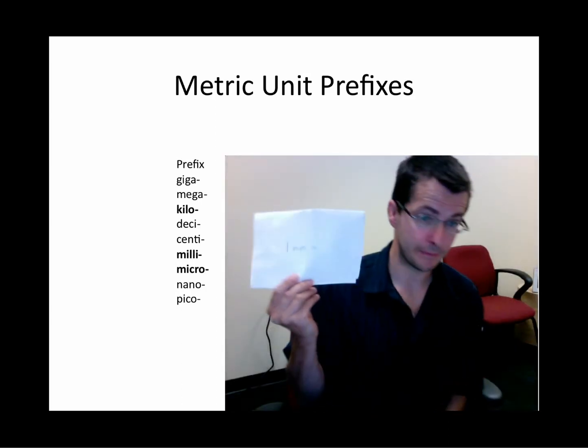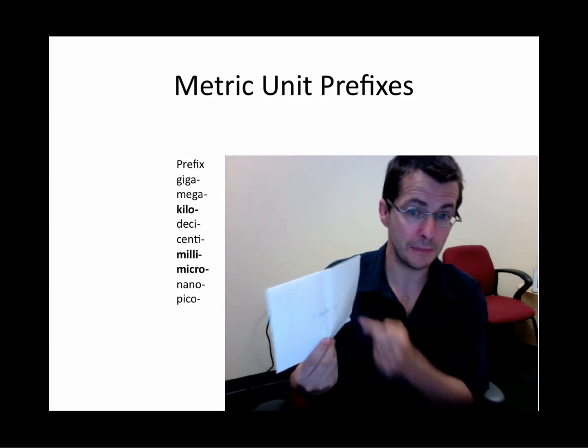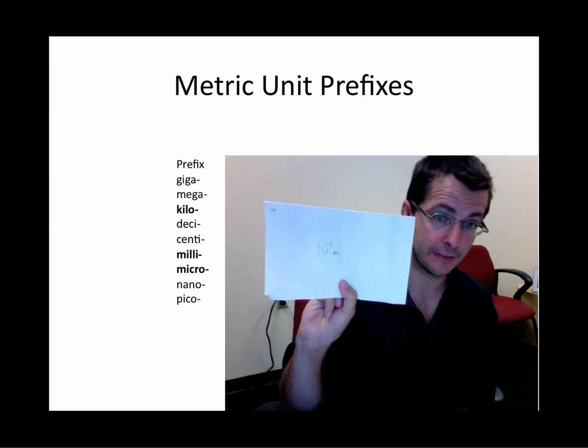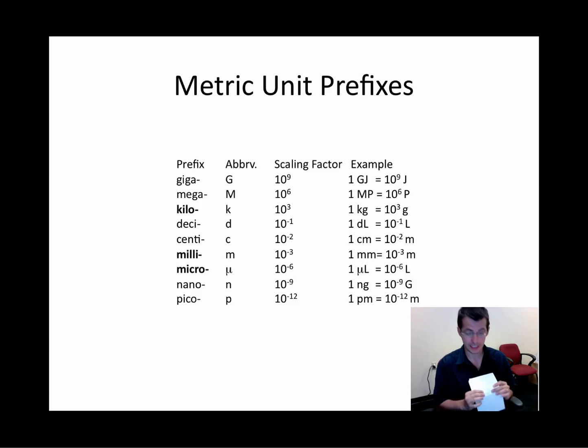Another way to do this, again, flashcard style, put a definition. One millimeter is equal to 10 to the negative third meter. And don't forget the units. Again, bang these out. And you should mix it up.